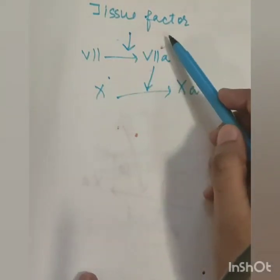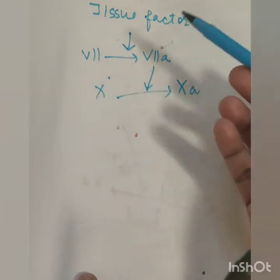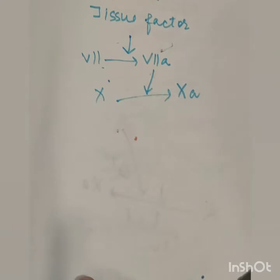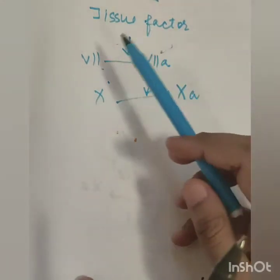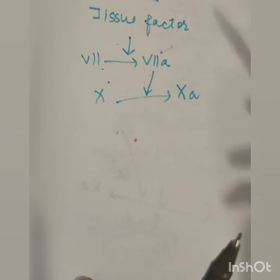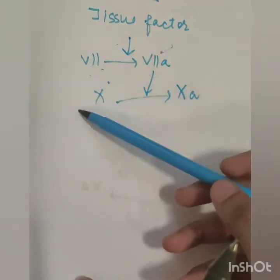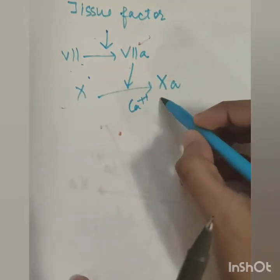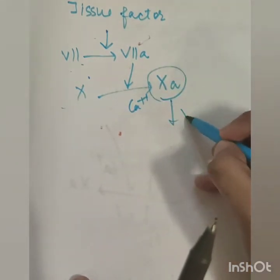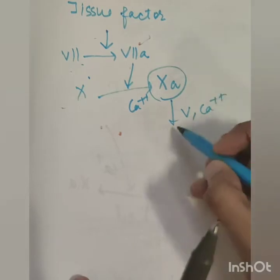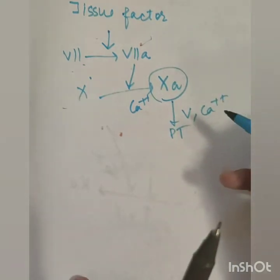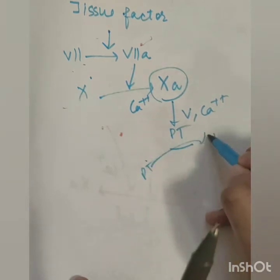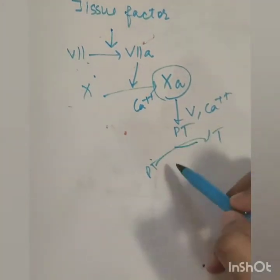The extrinsic factor is the tissue factor. When the tissue has trauma, the 7th factor is activated. Which factor was activated? First of all, the 12th factor, after the 11th factor, the 9th and the 10th factor. The 7th factor activated in the presence of calcium. The 10th factor is the same. In the 5th factor and calcium, the prothrombin activator will create prothrombin activator. We know that it will convert the prothrombin into thrombin. And the phospholipids too.